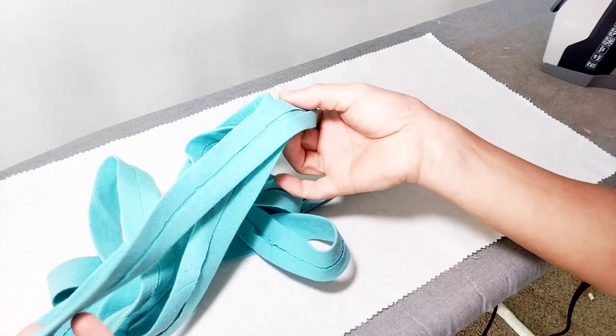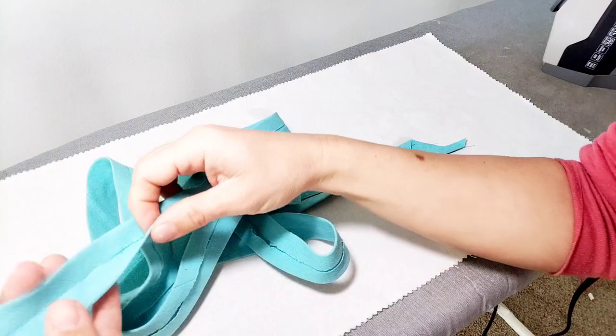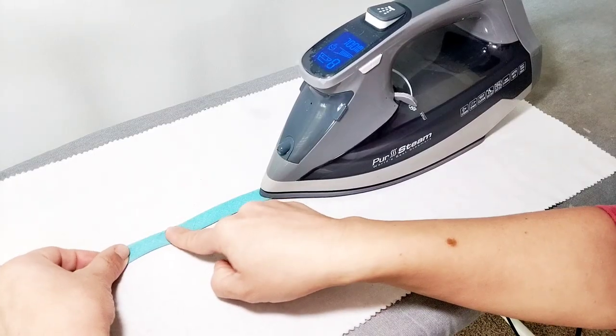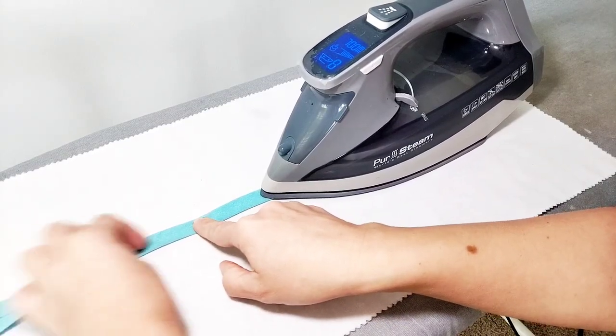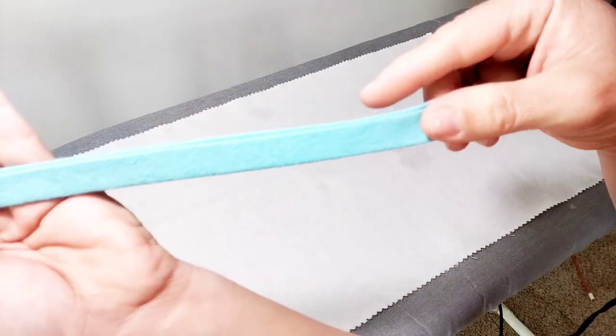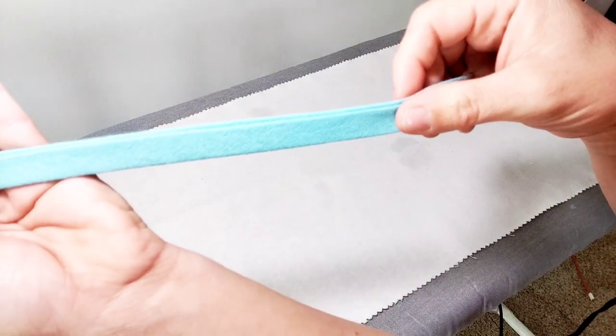Now that I've ironed it all, I'm going to iron it again in half, just slightly inside of the other edge. So there's the tiniest lip of fabric over the other edge.